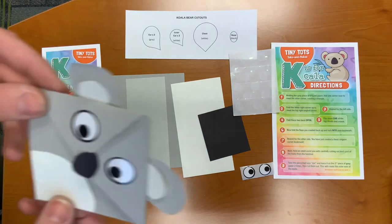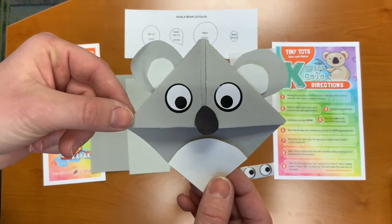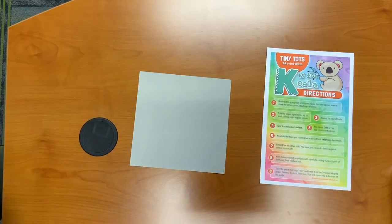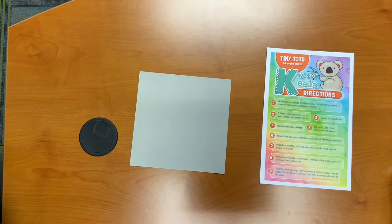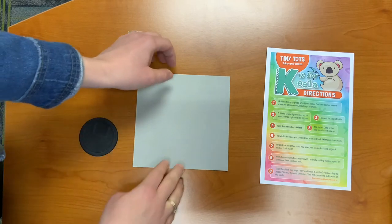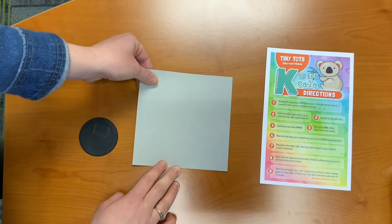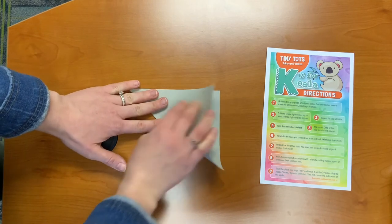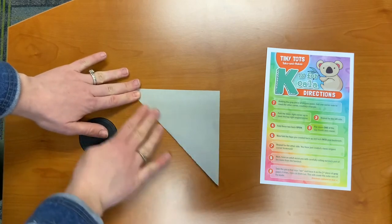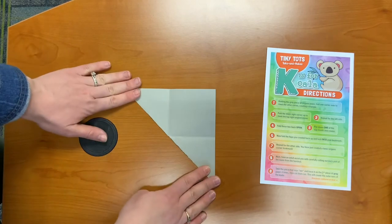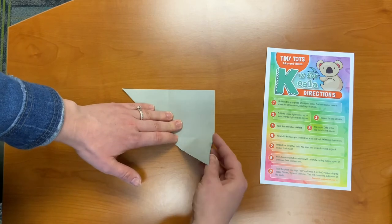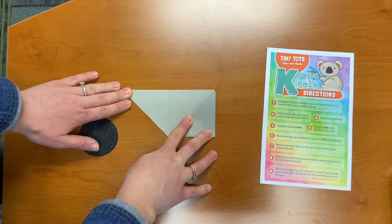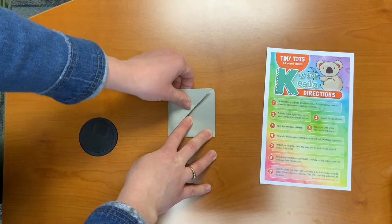For this week's craft, we are going to make an origami koala corner bookmark. Step one. Holding the gray piece of origami paper, fold one corner over to meet the other corner, creating a triangle. So we're going to fold one corner over to meet the other. Step two. Fold the lower right corner up to meet the top right angled corner.